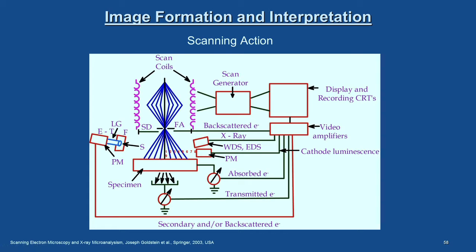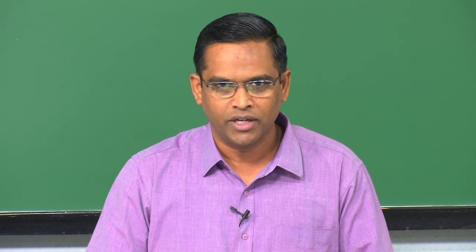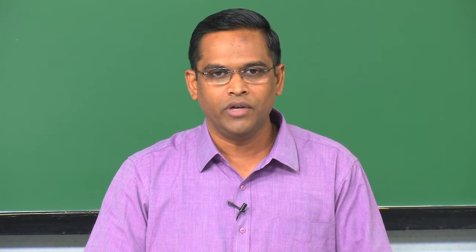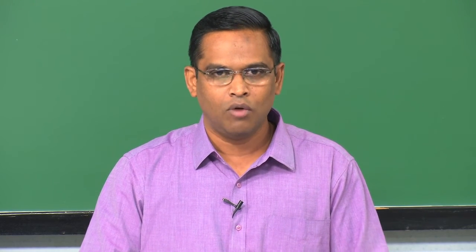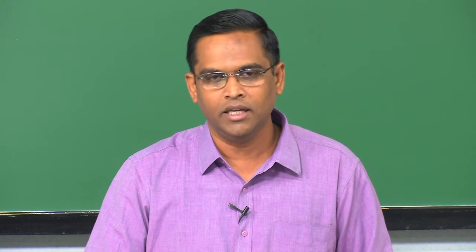When we say the electron beam is falling on a specimen and gives out a signal, we always talk with respect to a particular point — the signal coming from the specimen surface, whether it is a characteristic X-ray, a secondary electron, or a backscattered electron, allows us to interpret the specimen surface at that particular point. If we are interested in the complete surface area, the beam has to scan from one point to another, point by point.